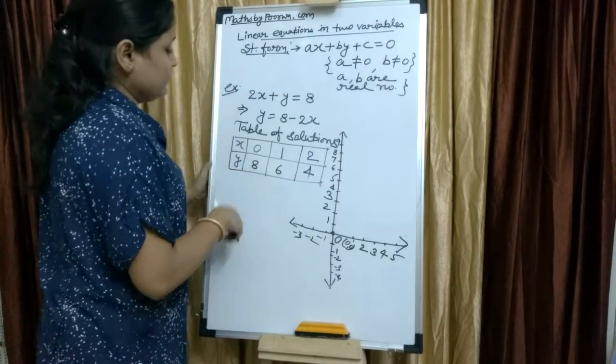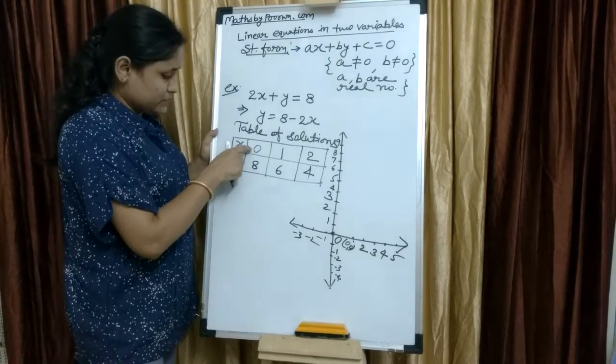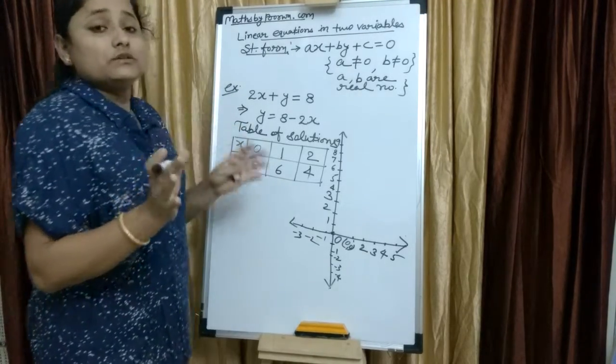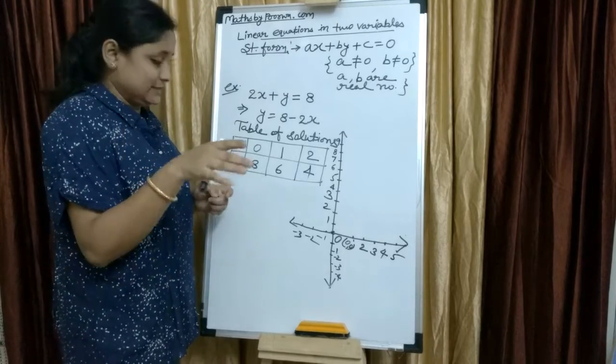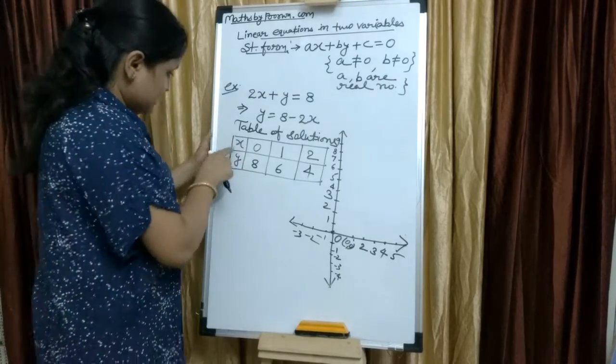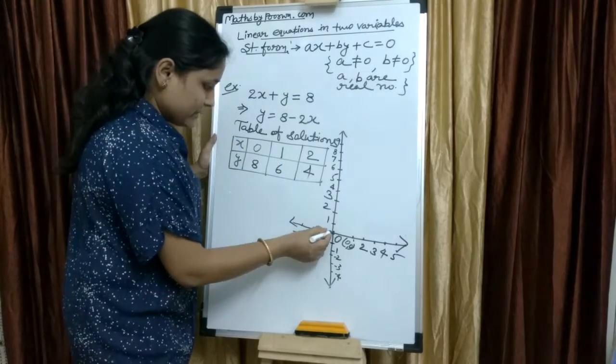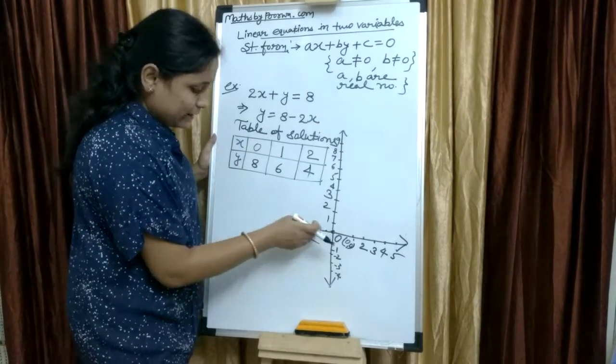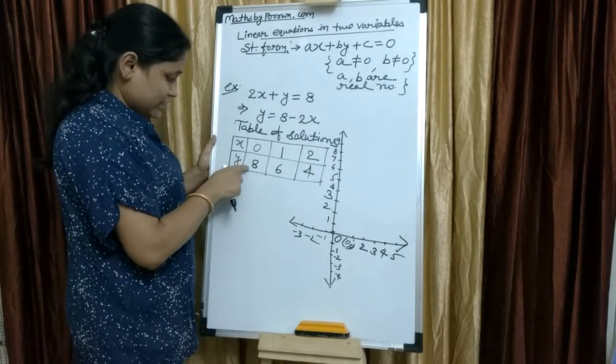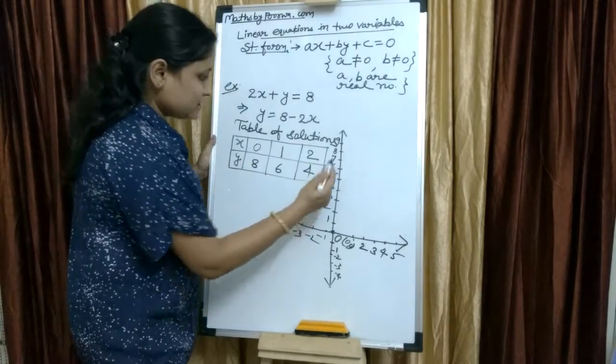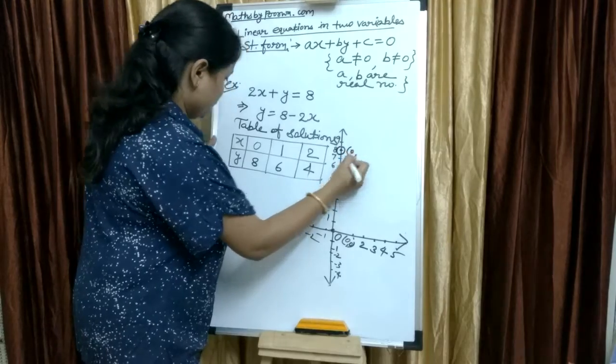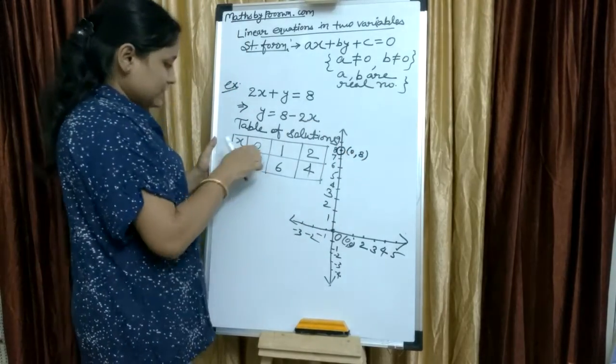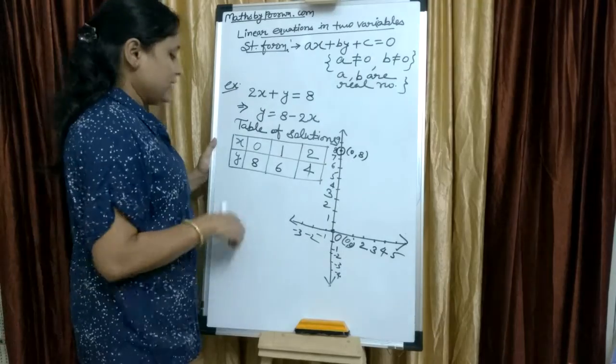Now, we will plot x equals to 0. When you have x equals to 0, means that is on y axis. The point is on y axis. x equals to 0 means the point is up or down the y axis. So, where is y equals to 8? The point is this. And coordinate is 0, 8. How to write? First x coordinate then y coordinate.